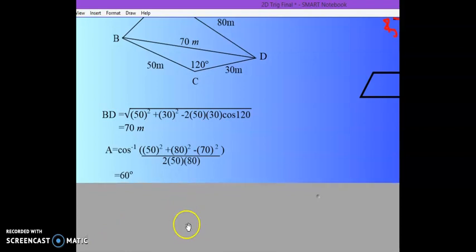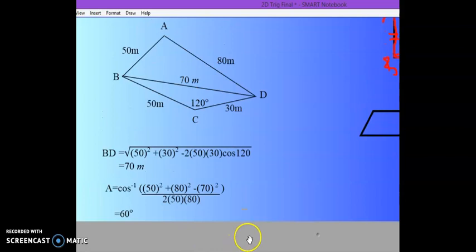But remember, in a triangle it could be 180 degrees minus 60 also. But why would this one not be 120 degrees?